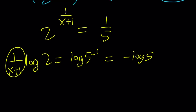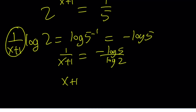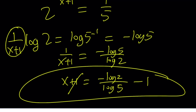I can isolate: 1/(x+1) equals negative log 5 over log 2. Flipping both sides: x plus 1 equals negative log 2 over log 5. Subtracting 1 and making a common denominator — using log 2 plus log 5 equals 1 — you get the exact same second solution as before.